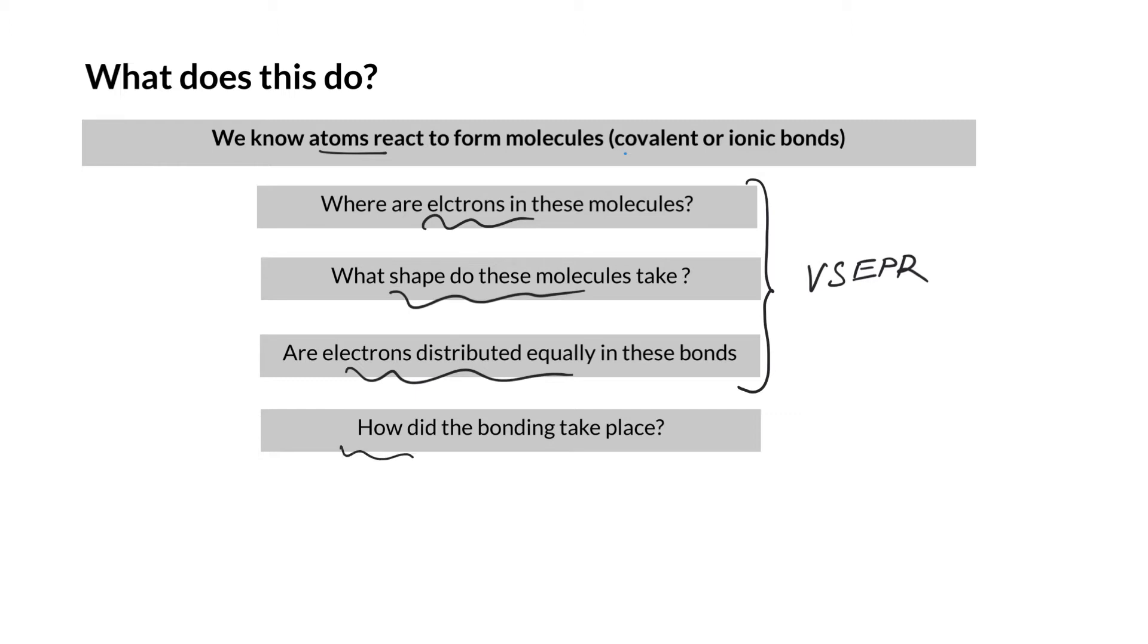The question is, how did the bonding take place? The answer lies in quantum mechanics because both electrons and atoms are quantum particles. They behave as a wave and a particle, so we use quantum mechanics to describe their positions more accurately.